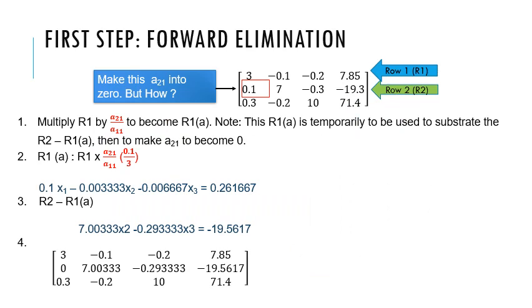In the first step of forward elimination, we will make the element A21 into 0 using R1 and R2 equation.